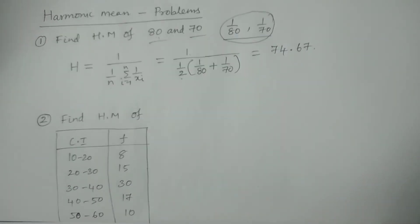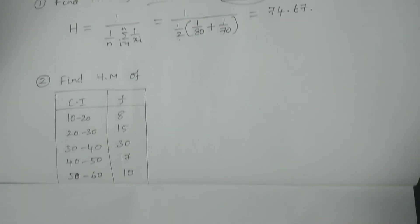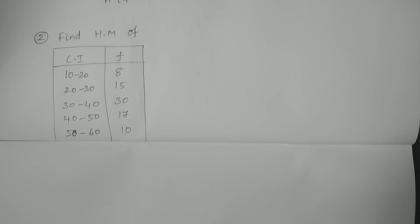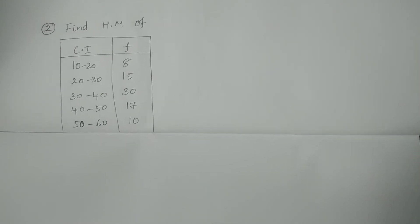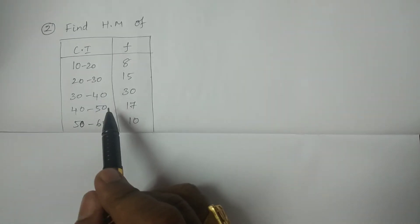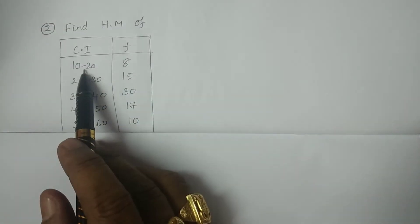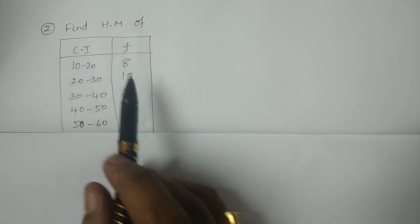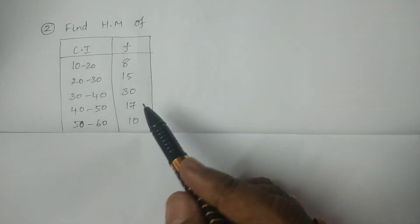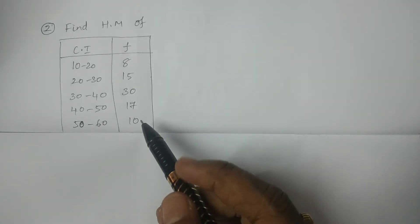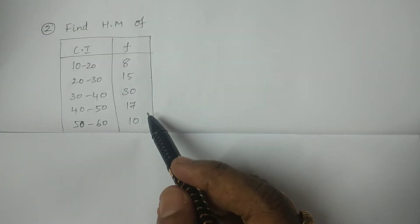Now come to the next problem. You have to calculate the harmonic mean for data that has class intervals and frequencies — this is a kind of grouped data, specifically a grouped frequency distribution.